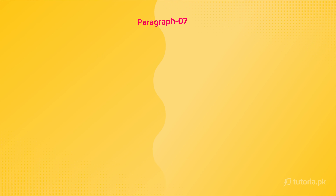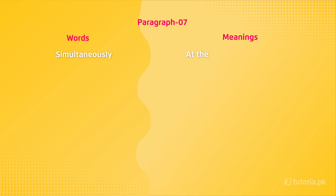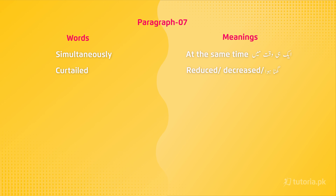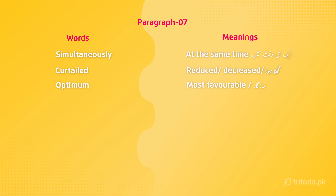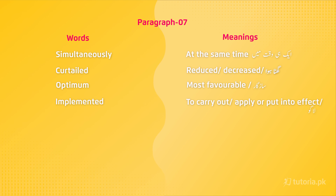We are on the last paragraph of our unit. We'll discuss difficult word meanings first. First difficult word is 'simultaneously' — it means at the same time, yaani ek hi waqt mein. Second is 'curtailed' — it means reduced or decreased. Third is 'optimum' — it means most favorable, ya saazgaar. Fourth is 'implemented' — it means to carry out, apply, or put into effect, yaani lagu karna.